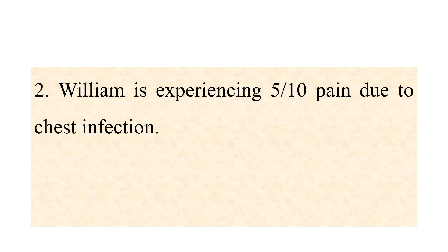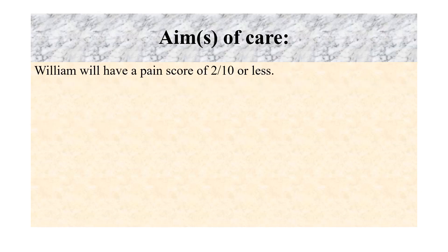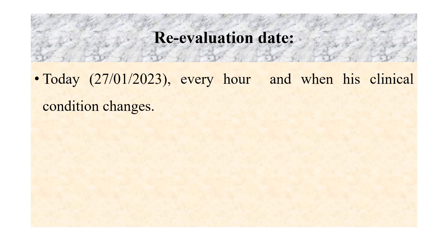The second nursing problem is: William is experiencing 5 over 10 pain due to chest infection. The aim of care is: William will have a pain score of 2 over 10 or less. The re-evaluation date would be today, 27/01/2023, every hour and when his clinical condition changes.